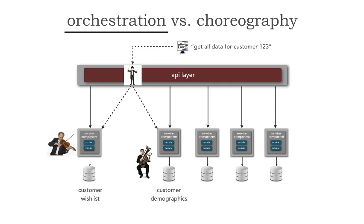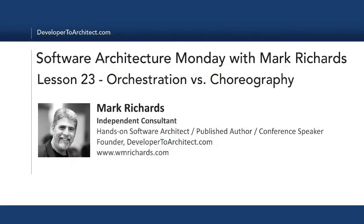That's a simple example to clarify orchestration versus choreography. Generally, when we need to gather information and aggregate it together into a single model, that's where orchestration comes in. When we only need a piece of information here or there, that's usually when services communicate between each other, like dancers, with choreography. Hopefully this simple example helps clarify the differences between orchestration and choreography and when to use each. This has been Lesson 23: Orchestration versus Choreography. Stay tuned each Monday for another lesson in Software Architecture Monday. Thank you very much.